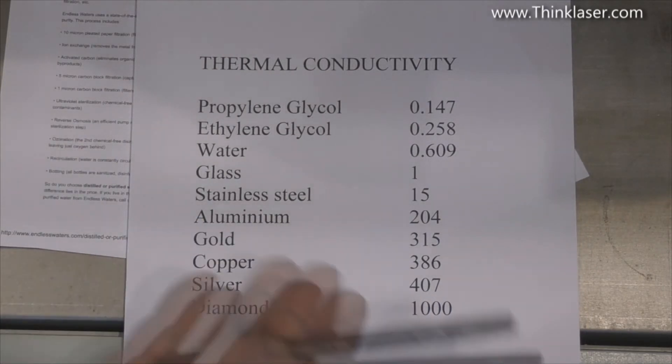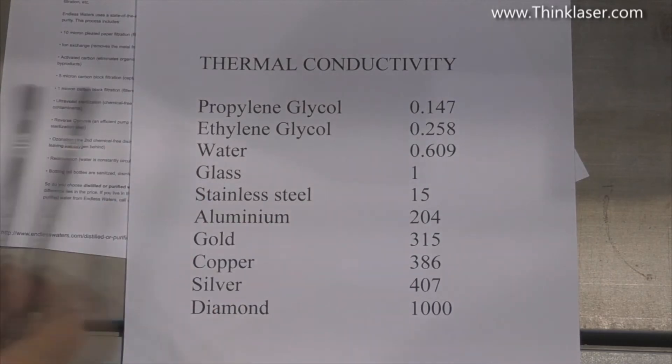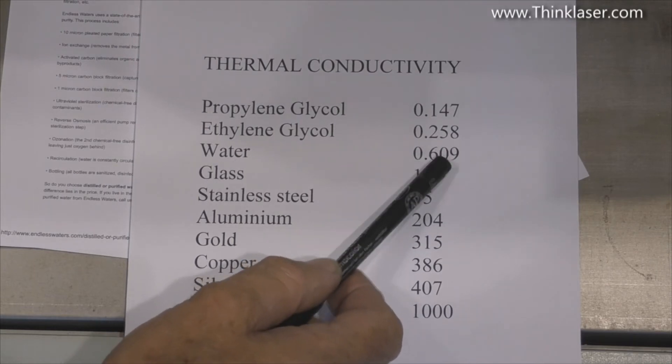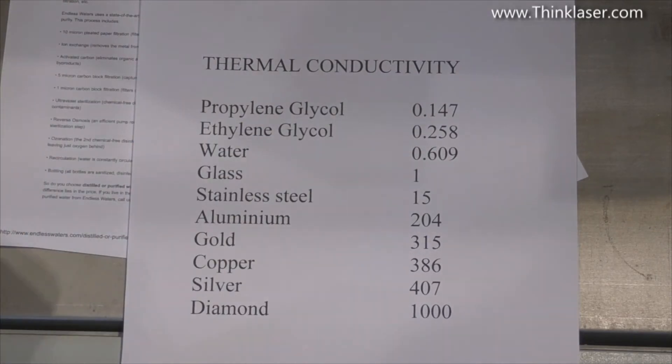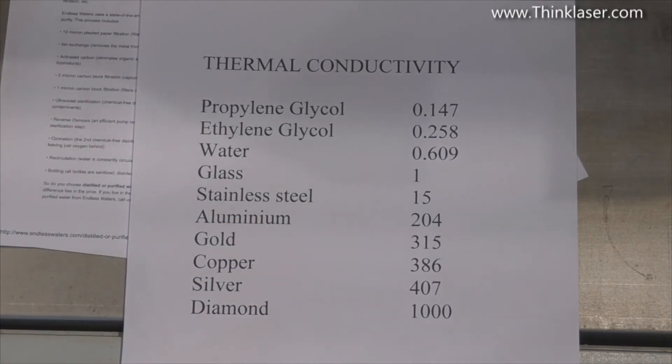Water is in itself 0.6, ethylene glycol is 0.258, so if you mix those two together you're going to actually reduce the thermal capability, the thermal transfer of water. So it's not going to be able to pick up heat as easily if you mix it with ethylene glycol.